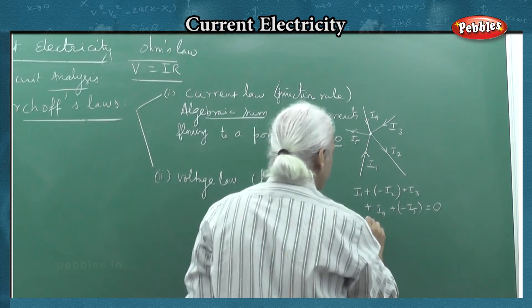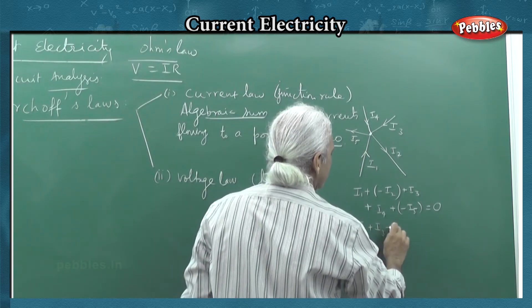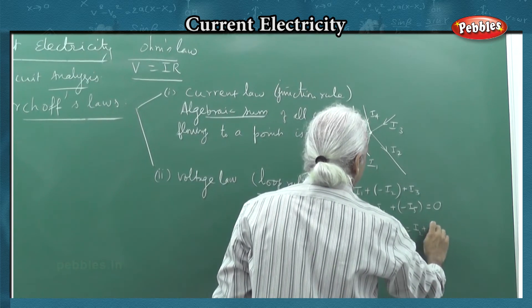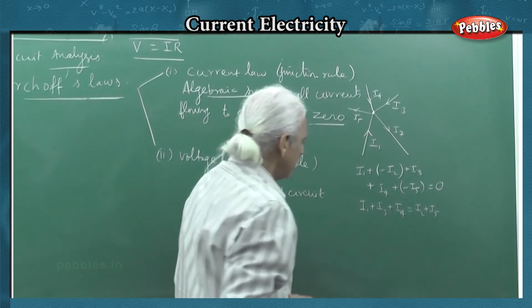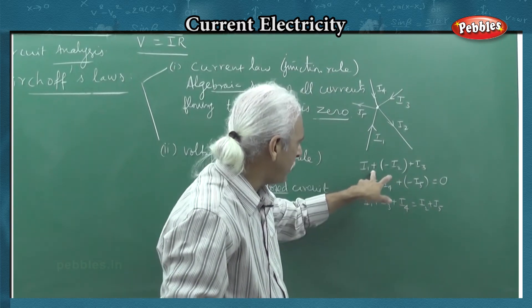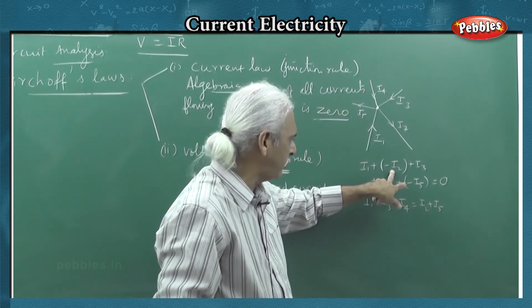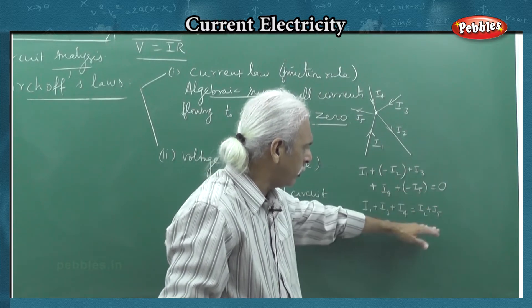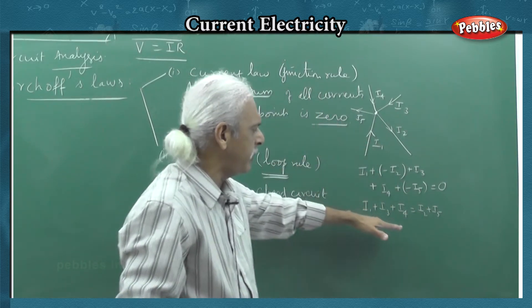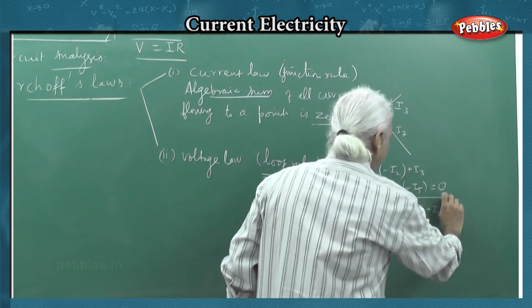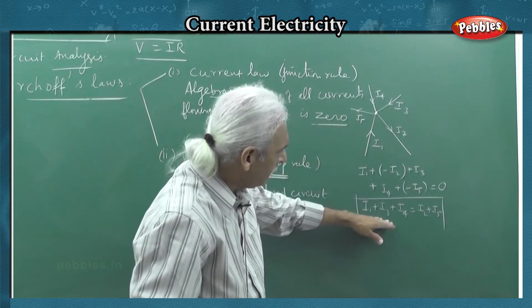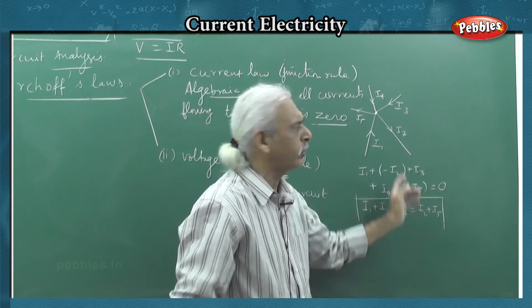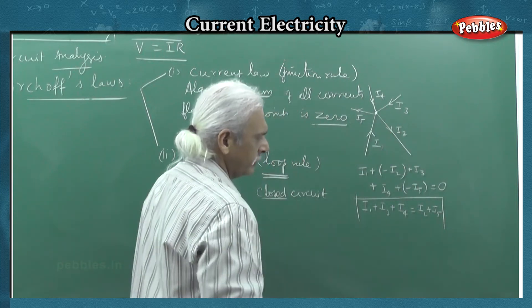So what is the meaning of this? The algebraic sum gives us positive and negative terms equal to zero. This same junction rule can be written in another form: all inward currents added together equal all outward currents added together at the junction point.